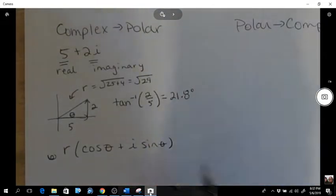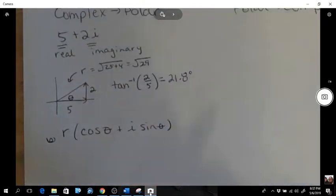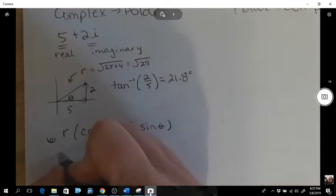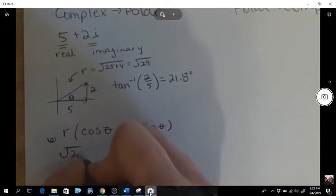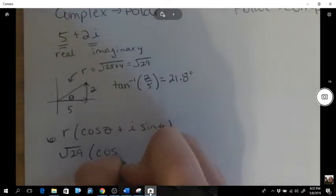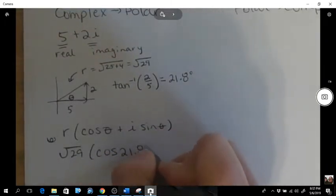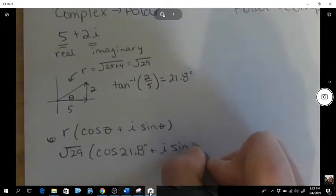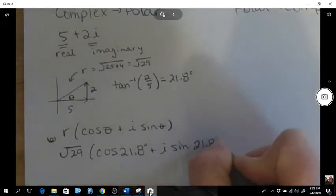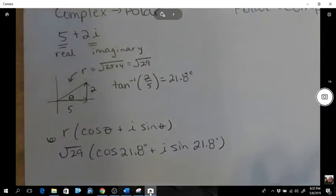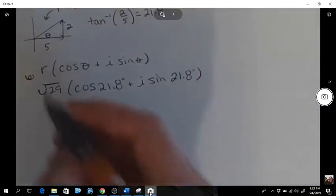So that's the polar way to write. So root 29 cos of 21.8 plus i sine of 21.8. I'll do one more of those.